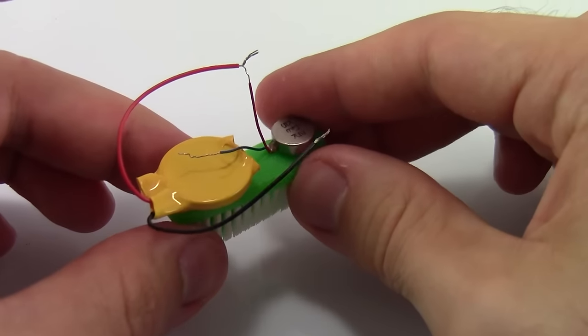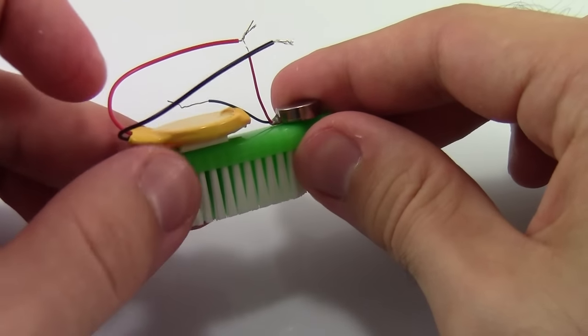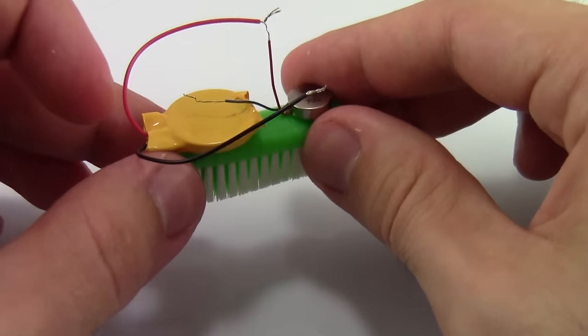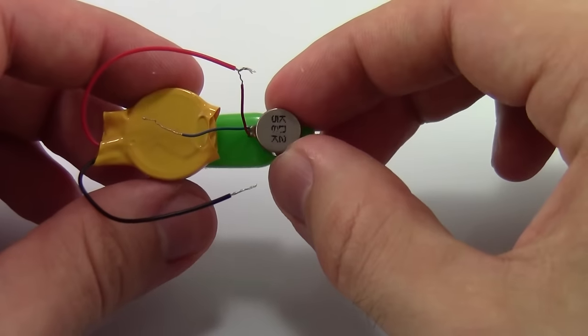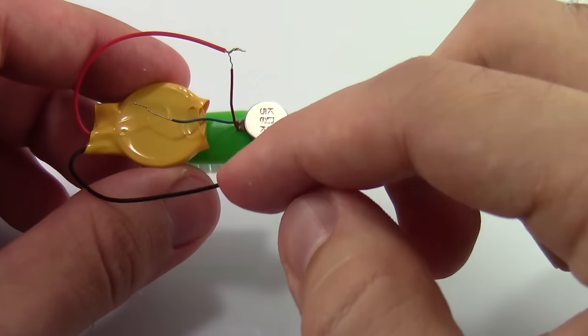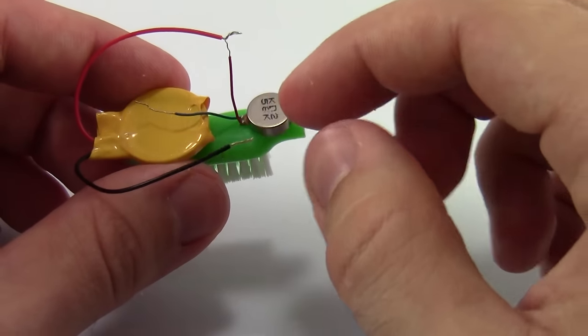Now you'll notice that the robot isn't moving yet. This is because we do not have a complete circuit, or a closed circuit, where electricity can flow in a complete path from positive to negative. The circuit is broken because the blue and black wires are not connected yet.